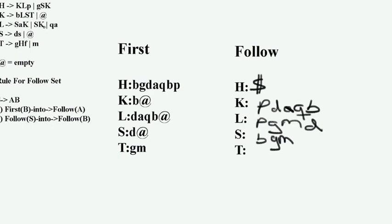The a goes into FOLLOW(s), so we put a down there. Then FIRST(k) into FOLLOW(s): b is already there, so no need to repeat it. These are both terminals, so there's nothing to do — since there's a terminal in between, FIRST(k) doesn't go into FOLLOW(s) there, so we skip that. Then f goes into FOLLOW(h), and since it's a terminal there's nothing left to do.